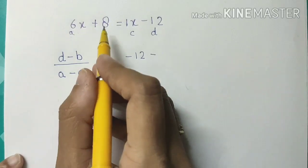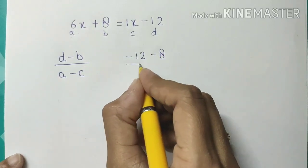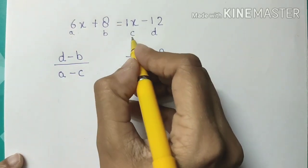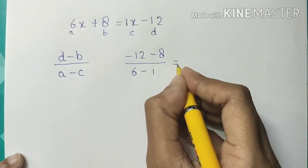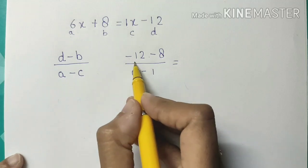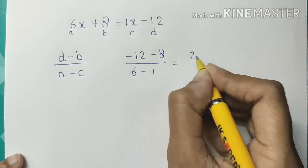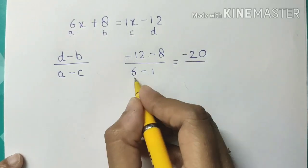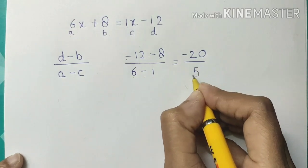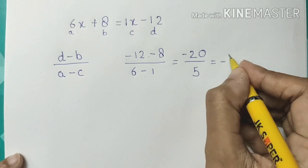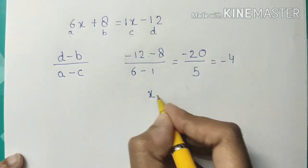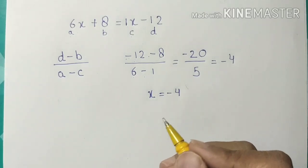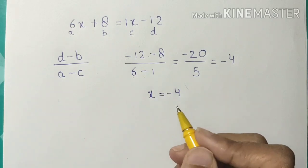Minus 12, minus B which is 8, upon A which is 6, minus C which is 1. Minus and minus become plus, so 12 plus 8 is 20, and 6 minus 1 is 5. So minus 20 upon 5 equals minus 4. The value of x is minus 4. This needs a little practice and you can do these sums mentally.